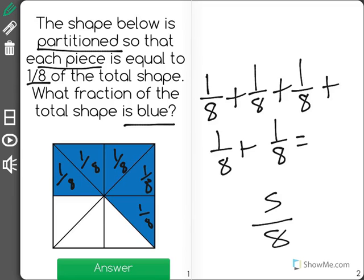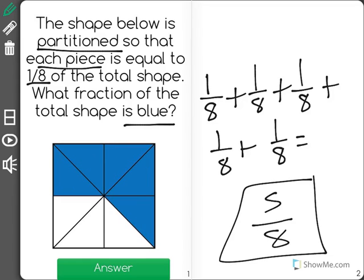And you can see a simpler way to do that is to just count. I have one, two, three, four, five out of a total of eight pieces. Five-eighths of the total shape is blue.